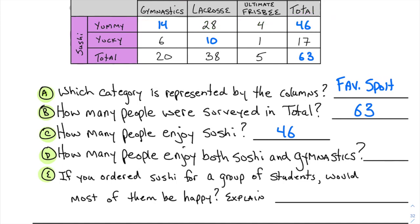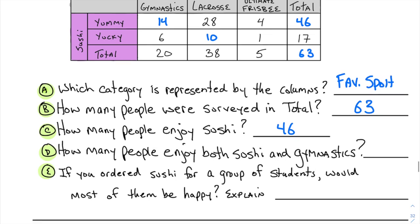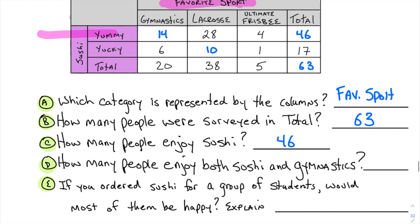How many people enjoy both sushi and gymnastics? Now we're looking for people that think sushi is yummy and people that like gymnastics. You see where those two row and columns cross? They cross at 14. So 14 is the answer.